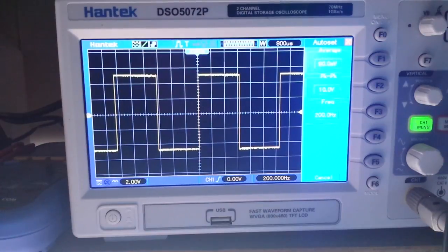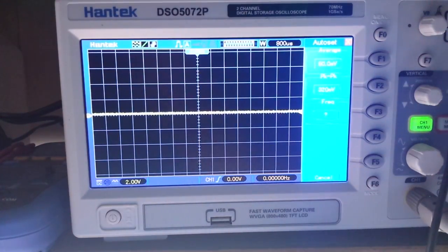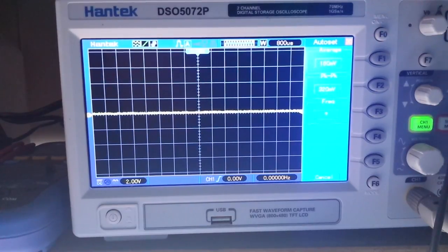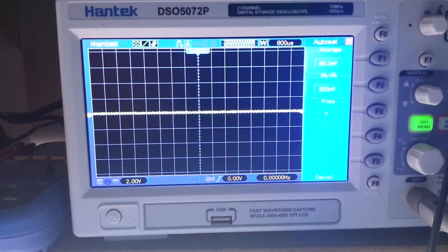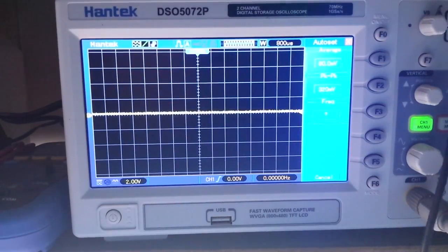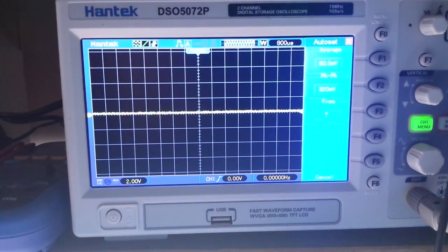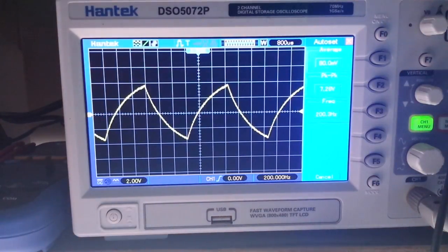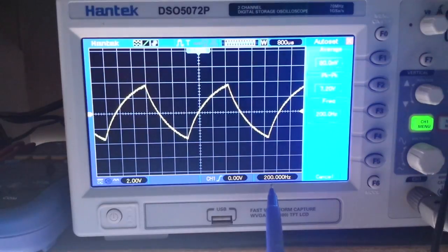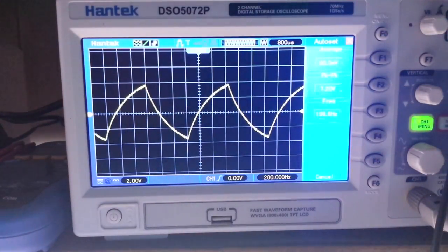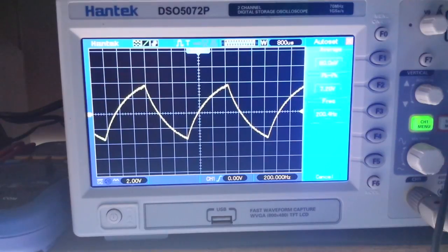Now I'm going to unhook the function generator from the scope and attach it to our integrator circuit that we've created here. We should see the sawtooth pattern. And there you see we have our 200 hertz sawtooth wave with a slight bit of attenuation. We're now only seeing about 8 volts peak to peak.